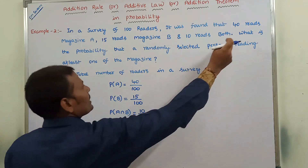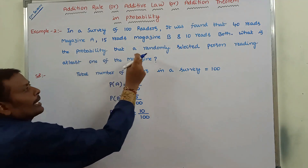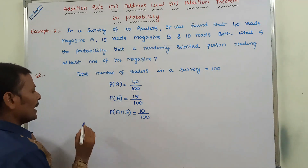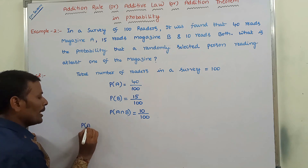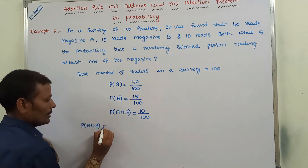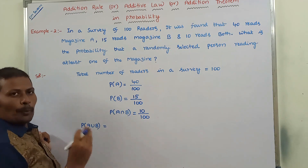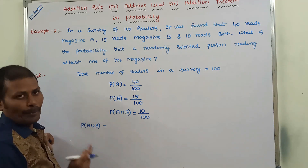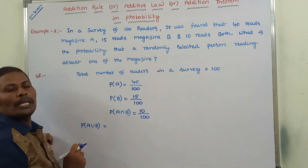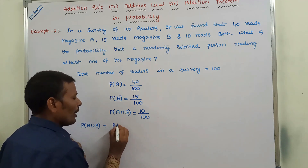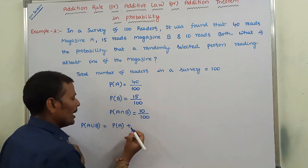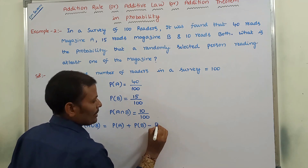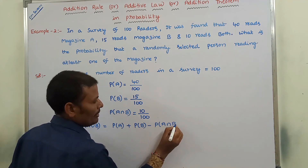Now, the probability that a randomly selected person reads at least one of the magazines is P(A ∪ B), meaning the probability of reading either magazine A or magazine B. According to the addition theorem: P(A ∪ B) = P(A) + P(B) − P(A ∩ B).